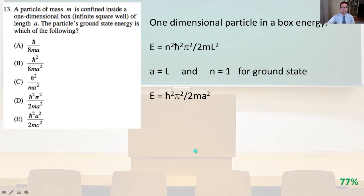Number 13. A particle of mass M is confined inside a one-dimensional box, an infinite square well, of length A. The particle's ground state energy is which of the following? This is going to be an equation we're going to have to memorize throughout the exam.